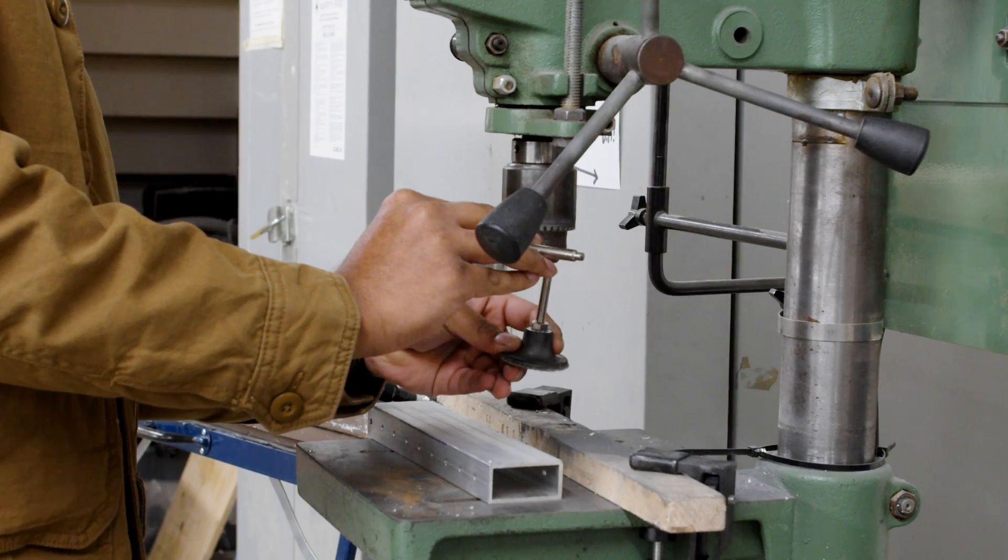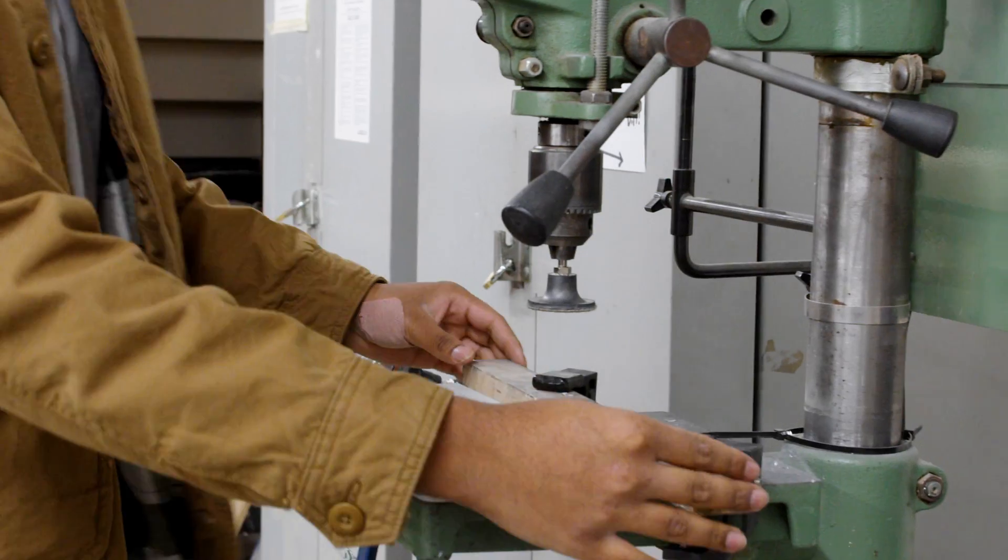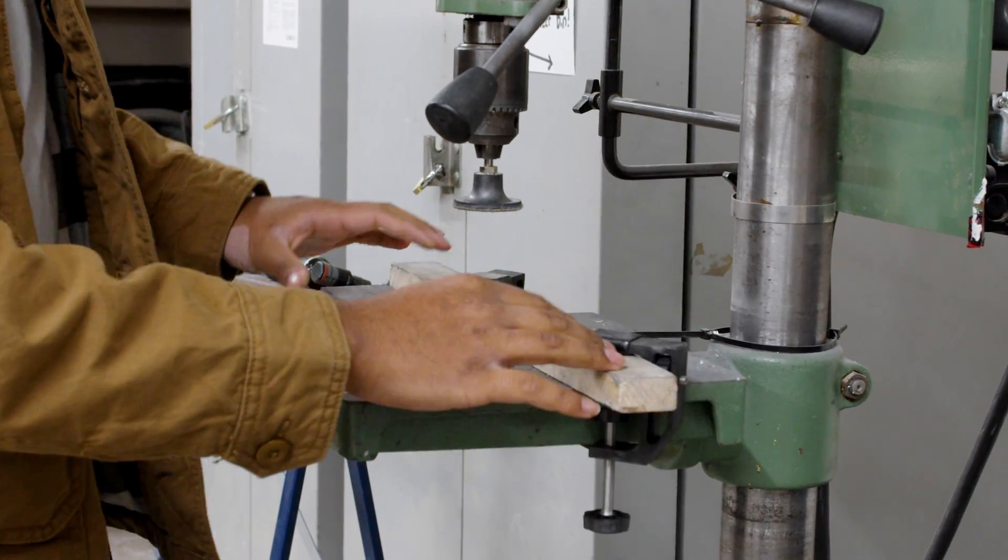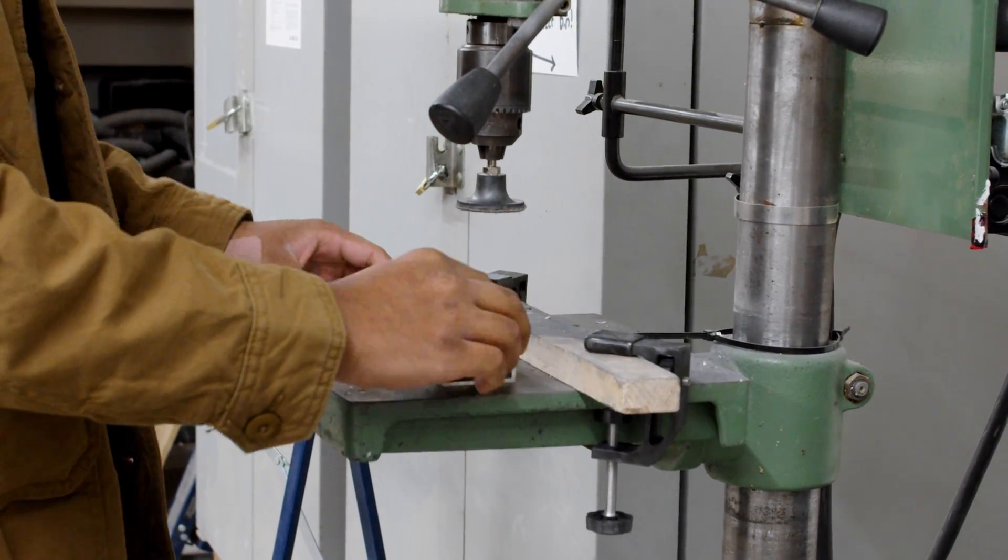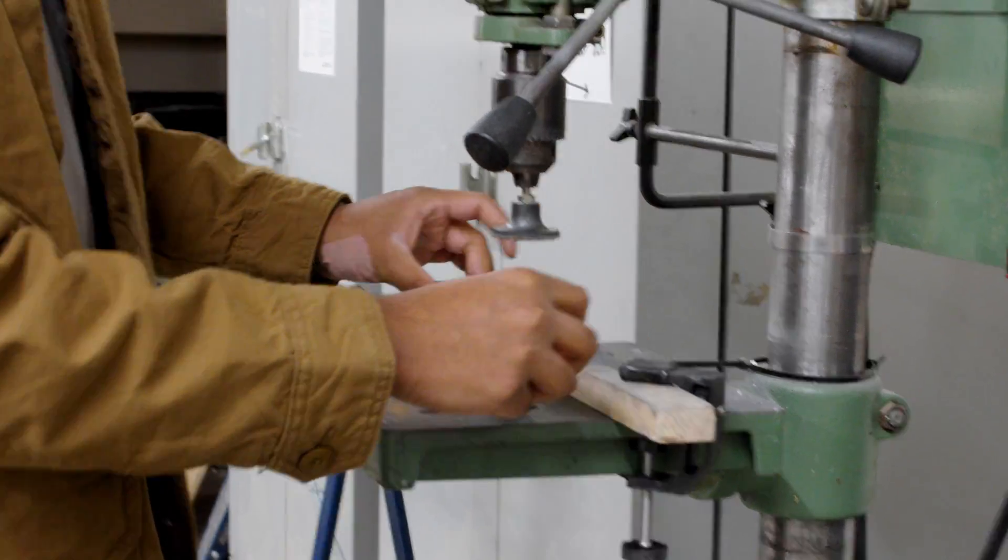So I'm going to put that in my drill press. And then the other thing that we have set up is this fence over here. This is just a piece of wood that we've clamped down to the drill press table. It's so that we have something to reference off of when we slide our part through.